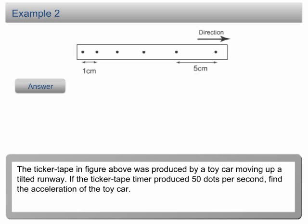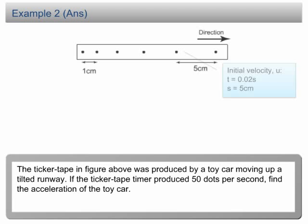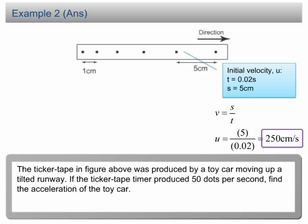Example 2: The ticker tape in the figure above was produced by a moving toy car up a tilted runway. If the ticker tape timer produced 50 dots per second, find the acceleration of the toy car. To find the acceleration, we need to determine the initial velocity, the final velocity, and the time taken for the velocity change. For the first tick, the time is 0.02 seconds and the displacement is 5 cm. Therefore, the initial velocity u = 5 cm / 0.02 s = 250 cm/s.